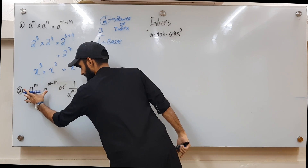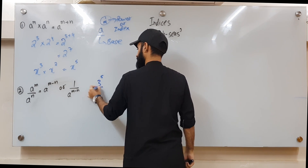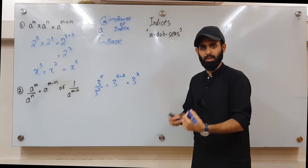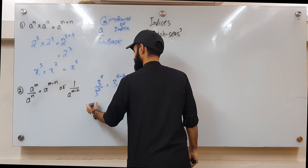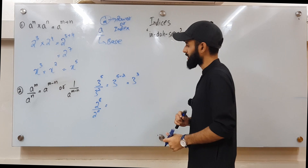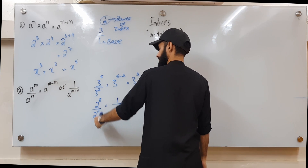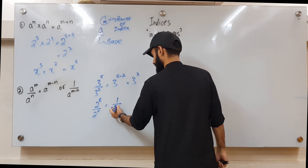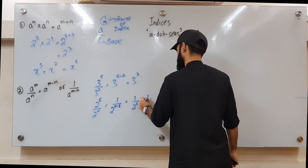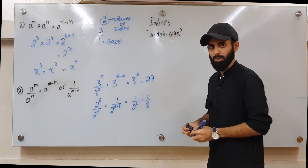For example: 3 to the power 5 over 3 to the power 2 can be written as 3 to the power 5 minus 2, which equals 3 to the power 3, which evaluates to 27. Suppose you have 2 to the power 8 over 2 to the power 11 — since you don't want a negative power, instead keep 2 to the power 11 in the denominator and subtract 8 from it: 11 minus 8 gives 2 cubed in the denominator, which is 1 over 8.